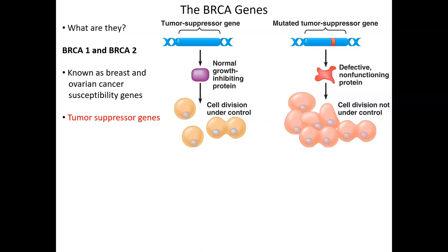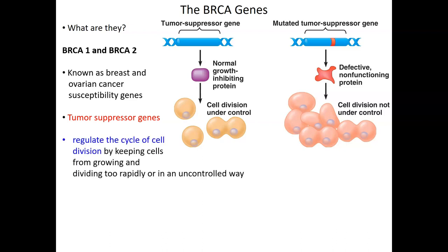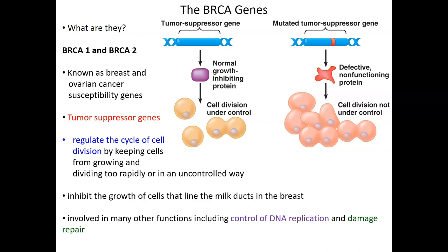When BRCA1 and BRCA2 genes are functioning properly and making the correct proteins, they keep cell proliferation down. They regulate the cell cycle, keeping the cycle of cell division moderated and keeping cells from growing too quickly. Specifically, these gene products — the proteins from BRCA1 and BRCA2 — inhibit the growth of cells that line the milk ducts of the breast. With those genes mutated, milk duct cells begin proliferating and can give rise to tumors. These proteins are also involved in controlling DNA replication, more specifically in DNA damage repair — particularly double-strand breaks in DNA, which give rise to secondary accumulated mutations.